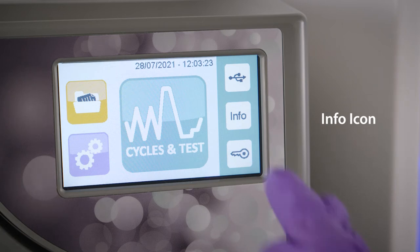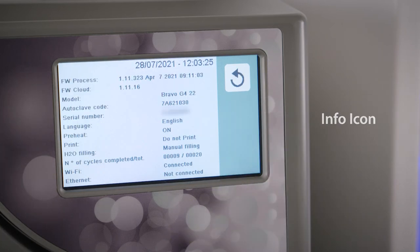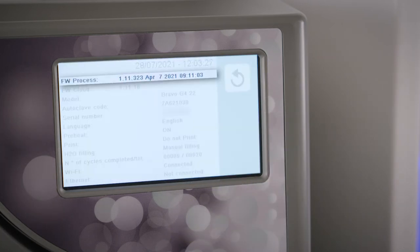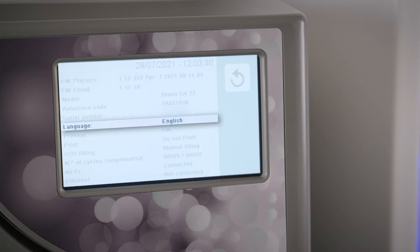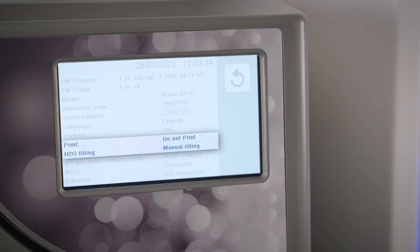The info icon provides detailed information about your unit, such as the current firmware version, serial number, language, cycle count, connectivity status, and devices connected to the unit.